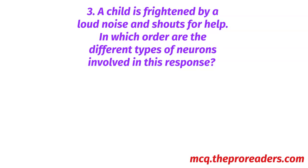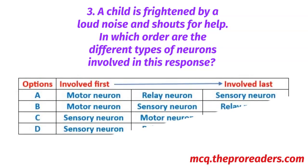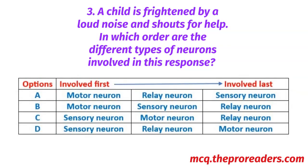A child is frightened by a loud noise and shouts for help. In which order are the different types of neurons involved in this response, from first to last involved? A: Motor neuron, relay neuron, sensory neuron. B: Motor neuron, sensory neuron, relay neuron. C: Sensory neuron, motor neuron, relay neuron. D: Sensory neuron, relay neuron, motor neuron. Option D — sensory neuron, relay neuron, motor neuron — is the correct answer.